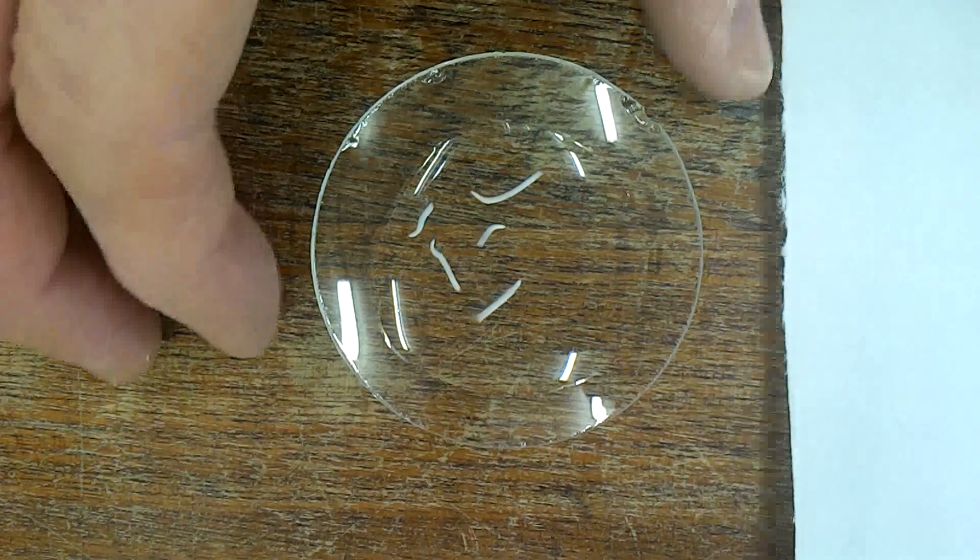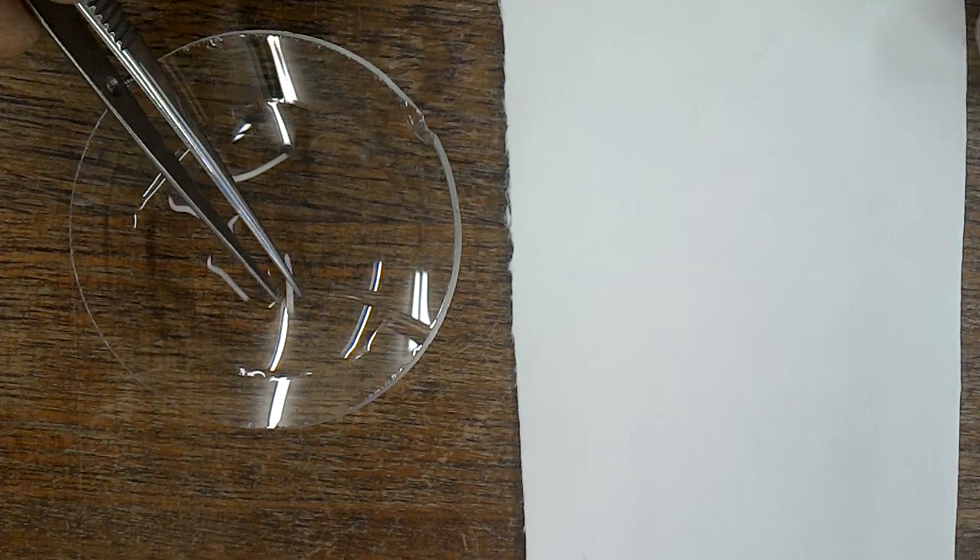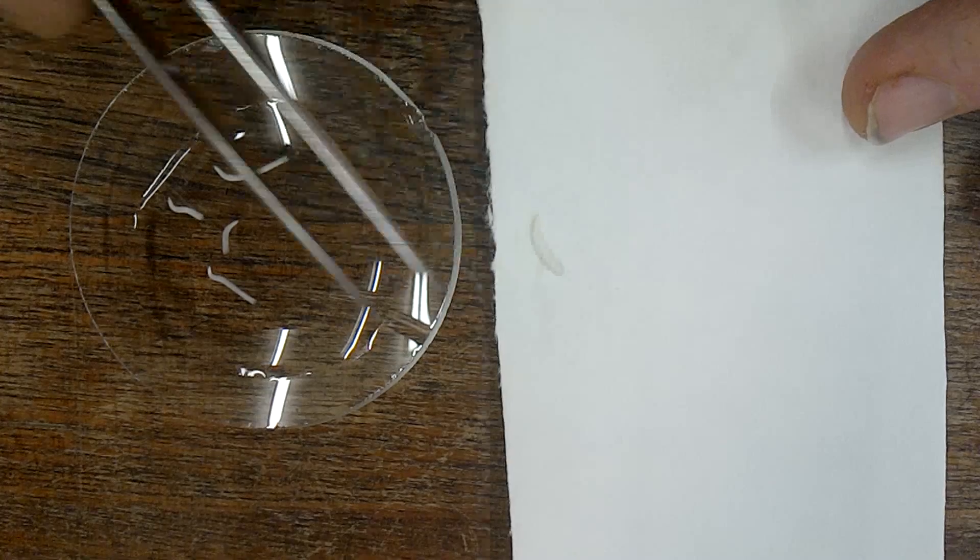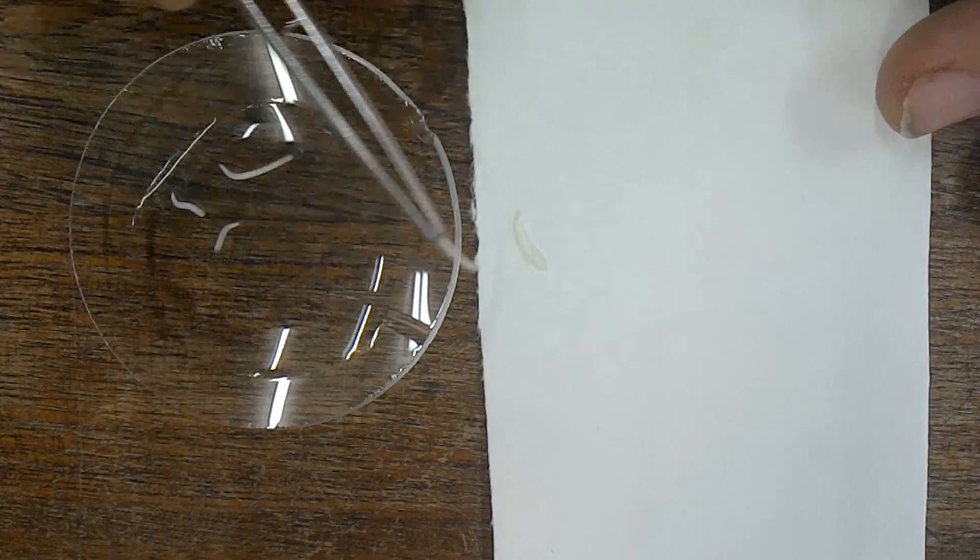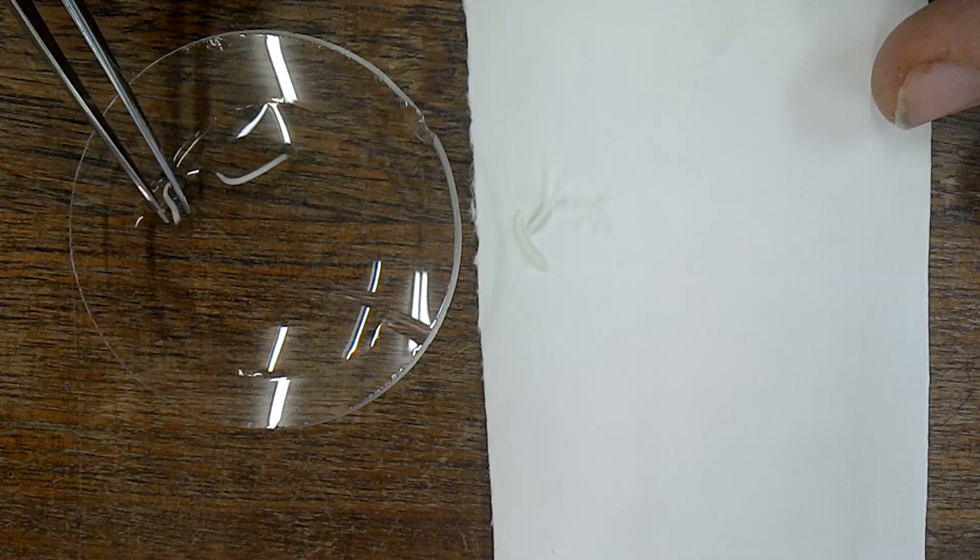Then we need to blot them dry, so we'll transfer them onto some blotting paper. Very carefully—be careful not to squash them too much, they'll be delicate.